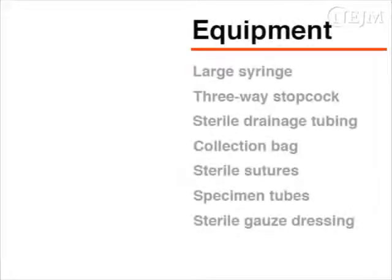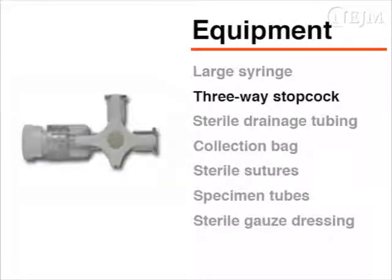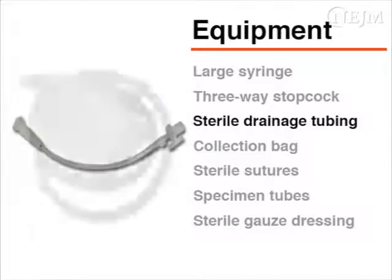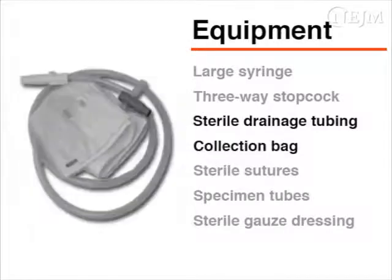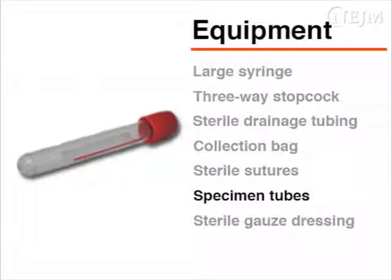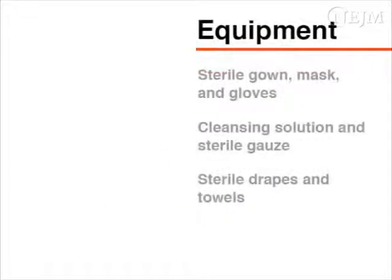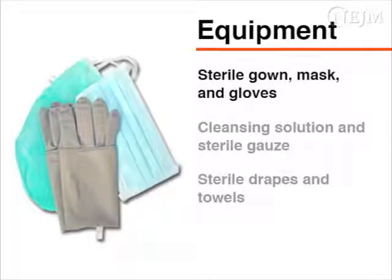For the collection of pleural fluid and continuous in-situ drainage, you will need a large syringe, a three-way stopcock, sterile drainage tubing, a collection bag, and sterile sutures. You will also need specimen tubes in which you can collect fluid samples for culture and sensitivity analysis. Sterile gauze dressing is needed for the puncture site. The procedure is aseptic; you will need a sterile gown, mask, and sterile gloves.